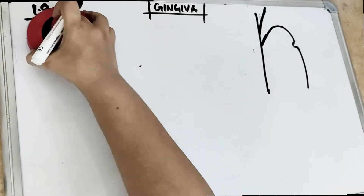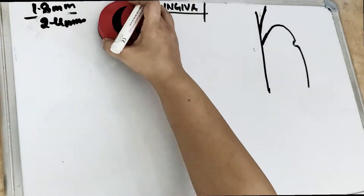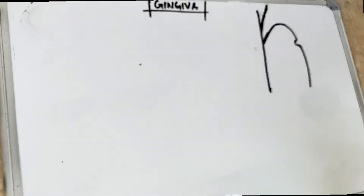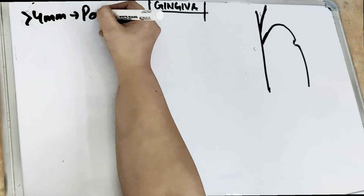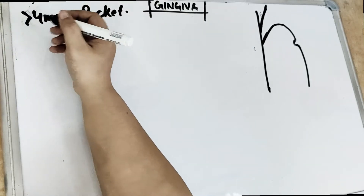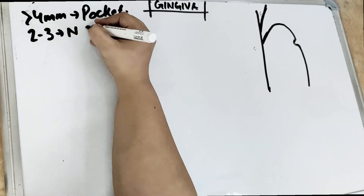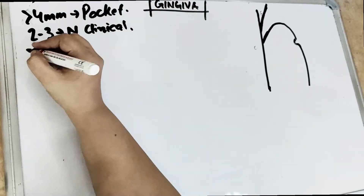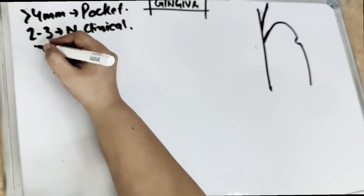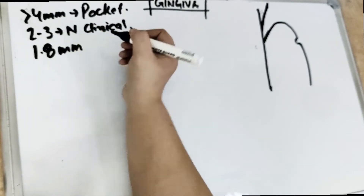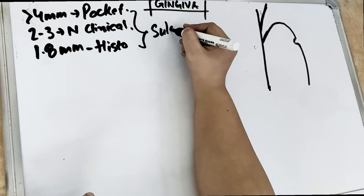The clinical depth is 2 to 3 millimeters. If the depth is more than 4 millimeters, then we call it a pocket. So more than 4 millimeters is the pocket, and in that case we have to do pocket reduction procedures. 2 to 3 millimeters is the normal clinical depth. The histological depth — once we cut and take out the tooth — it is 1.8 millimeters. This is the sulcular depth, which we studied in the last video.